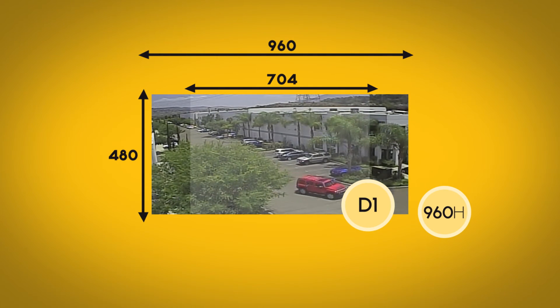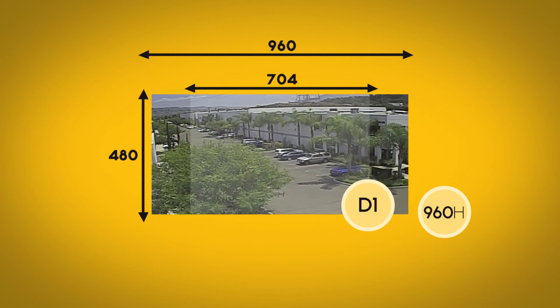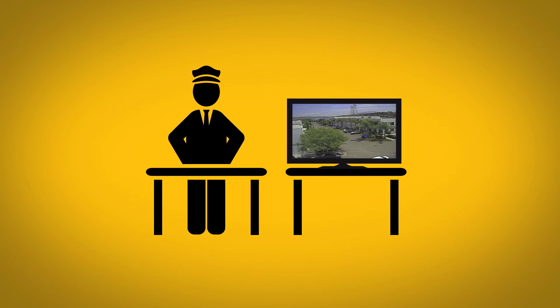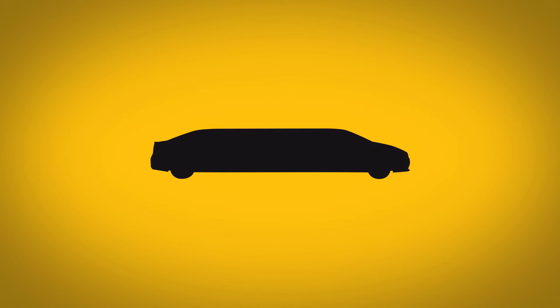Since 960H cameras have a wider field of view than D1, you'll see more of the action. And of course, it better fits your widescreen monitor, so your image won't be distorted by being stretched to fit.